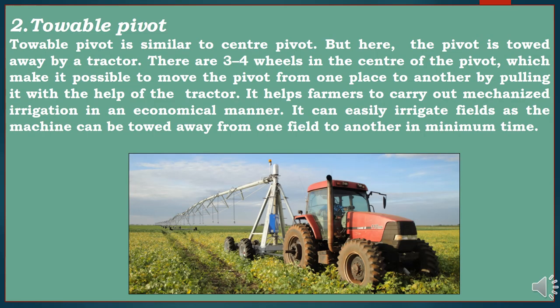The second type of sprinkler irrigation is towable pivot. Towable pivot is similar to center pivot but here the pivot is towed away by a tractor. There are three to four wheels in the center of the pivot which make it possible to move the pivot from one place to another by pulling it with a tractor. It helps farmers carry out mechanized irrigation economically and can easily irrigate fields as the machine can be towed from one field to another in minimum time.